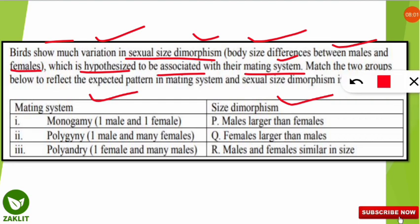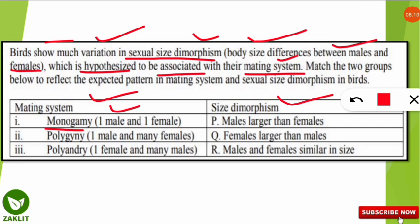In monogamy, one male reproduces with one female. In this case, males and females have more or less similar body sizes, so there is no significant size difference. In polygyny — 'gyno' refers to the female part, so many females with one male — the males are hypothesized to have larger bodies compared to females.